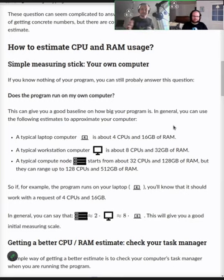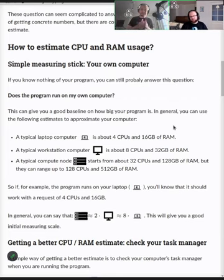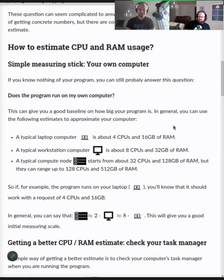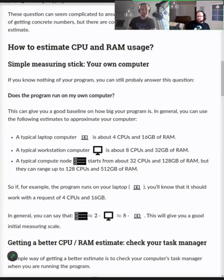If it didn't run on your laptop, you know you need more than that. You can get a range of values to fit the job into. You might even know why it didn't run: did you run out of memory, or did it just take ages? In the first case you need more memory than your machine has. In the second case, check how many CPUs it actually used — if it used more than one, requesting more CPUs might speed it up.